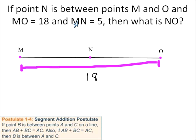That's what we're told there. And M to N is 5. So our distance from here to here is 5. What is NO? So this is what we're looking for. We're looking for the distance between N and O. That's what we don't know.